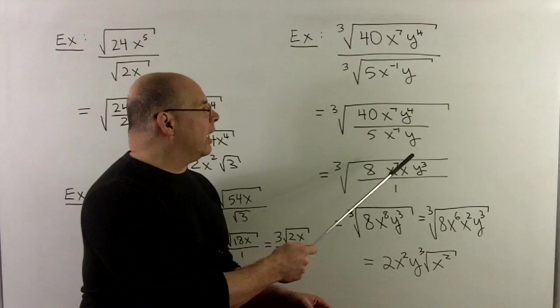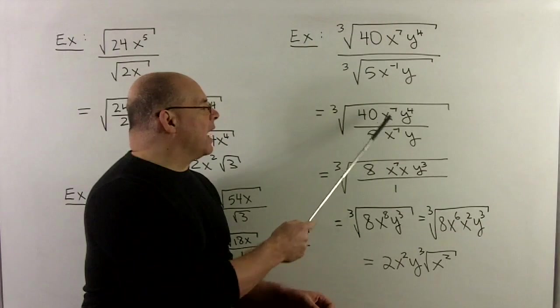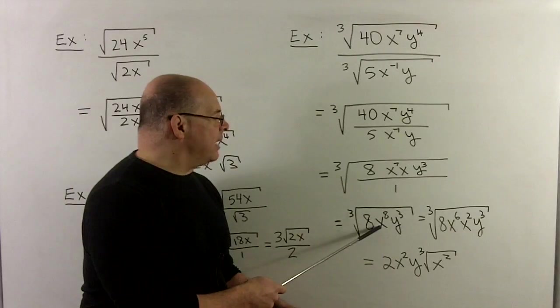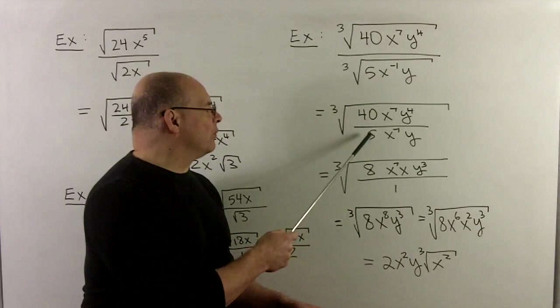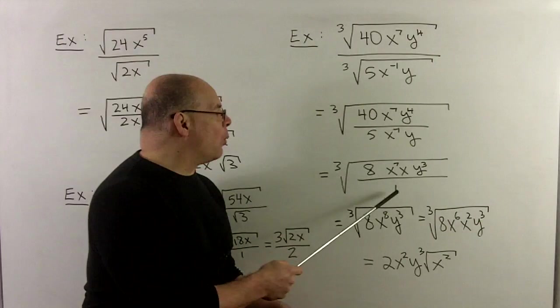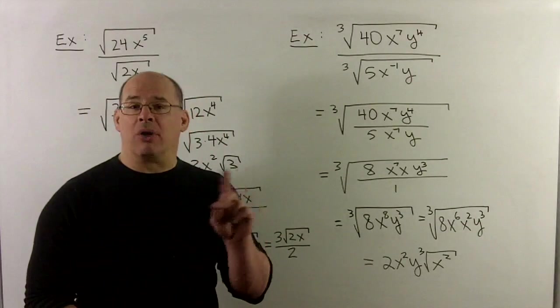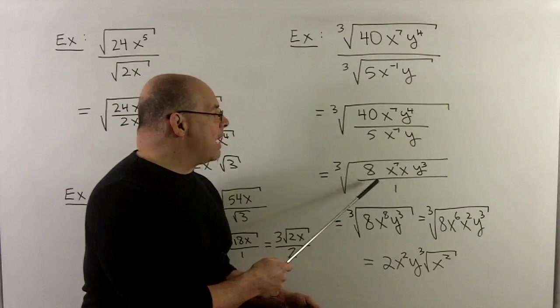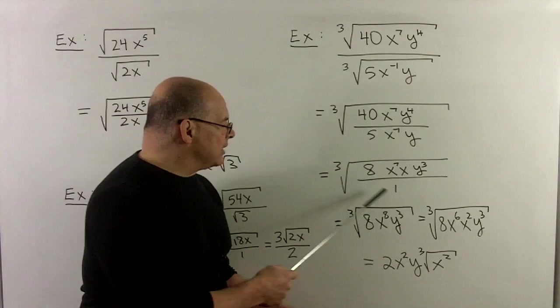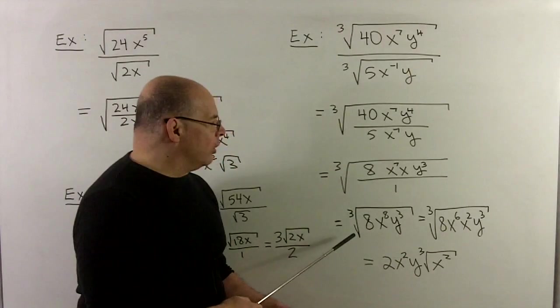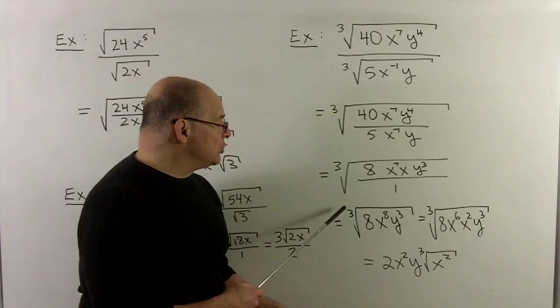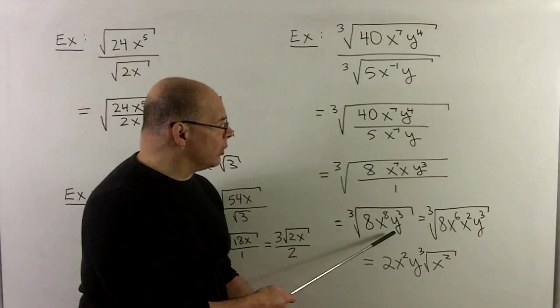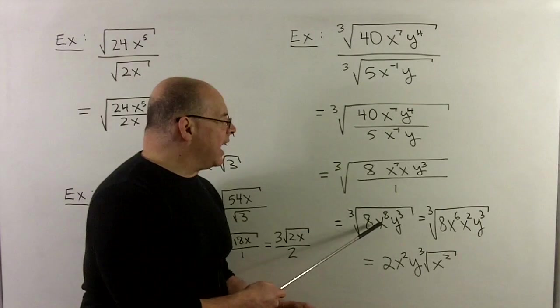And then the 40 over 5 is going to give me an 8, and I should think of that as an 8 over 1, so that way things aren't floating around in my fraction. We've got nothing in the denominator, so we'll just drop it. And now I've got something that I can work with like we were doing before. I want to pull out largest cubes. 8 is a cube, y³ is a cube, going to y. And then the x⁸ I have to deal with.